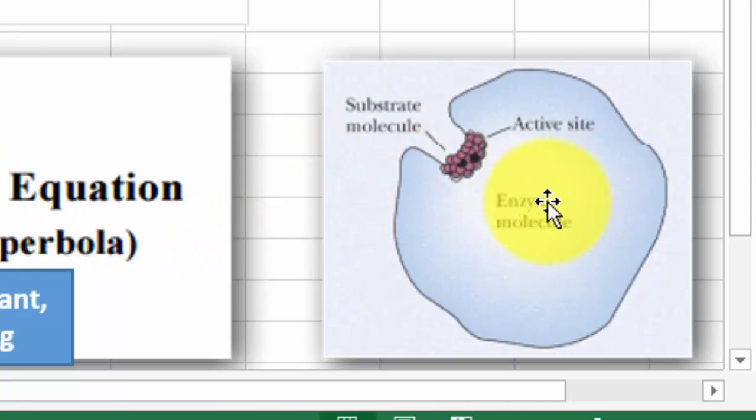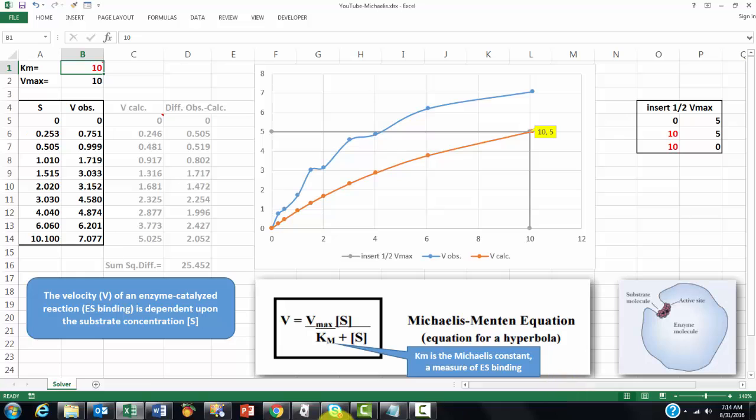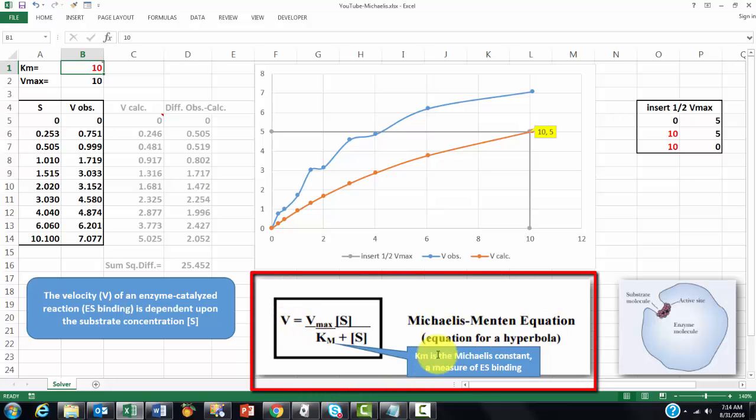Enzymes have an active site where they bind substrate molecules. The speed with which they bind, the velocity of an enzyme-catalyzed reaction, is dependent upon the substrate concentration. So how can you calculate that velocity? By using the Michaelis-Menten equation.